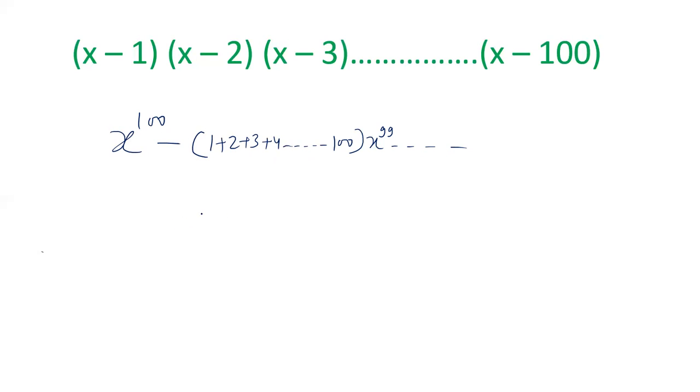Now let us learn another formula for sum of first n natural numbers. 1 plus 2 plus 3 up to n equals n into n plus 1 by 2. So the value of 1 plus 2 plus 3 up to 100 will be 100 into 100 plus 1 by 2.